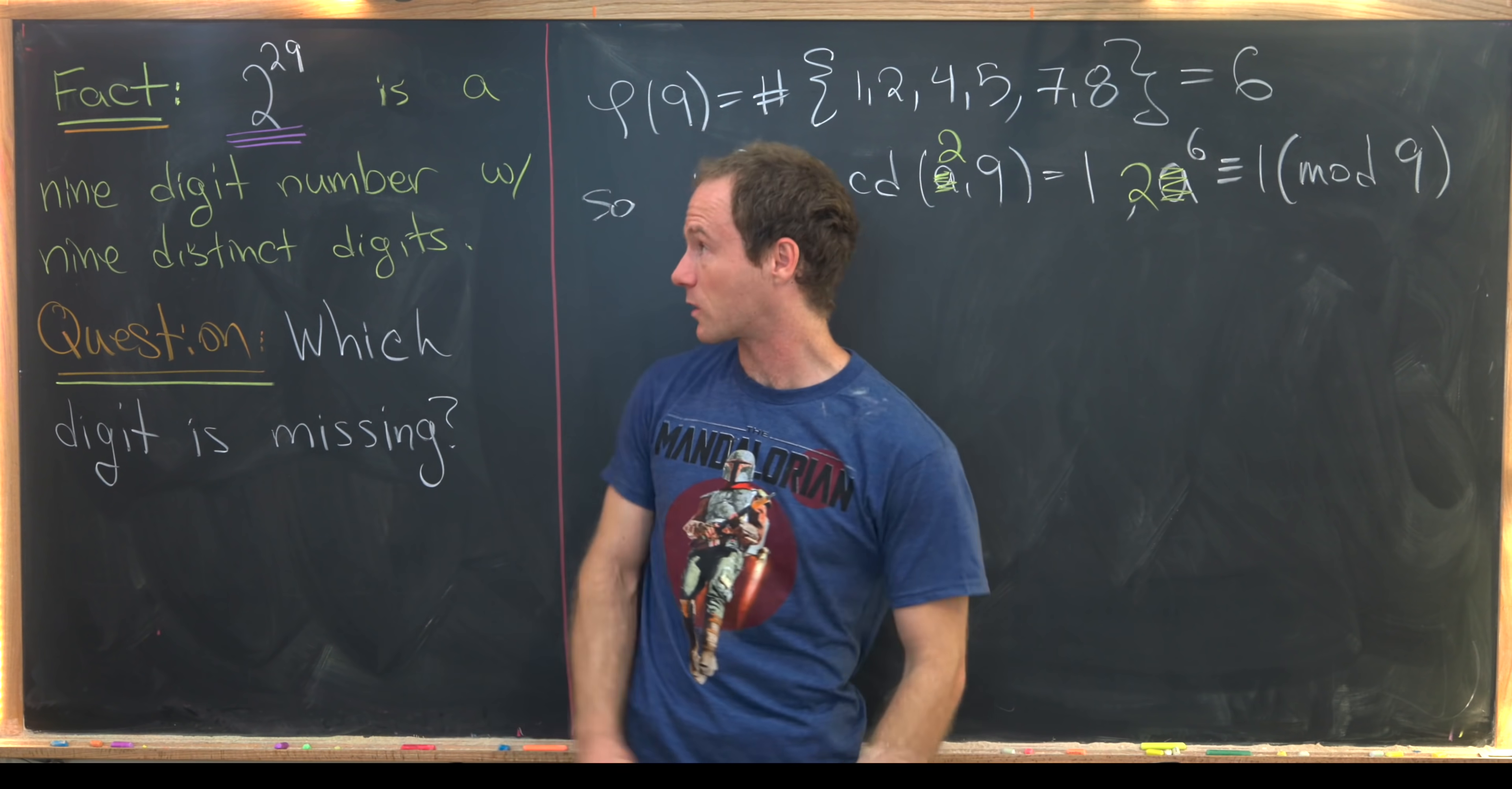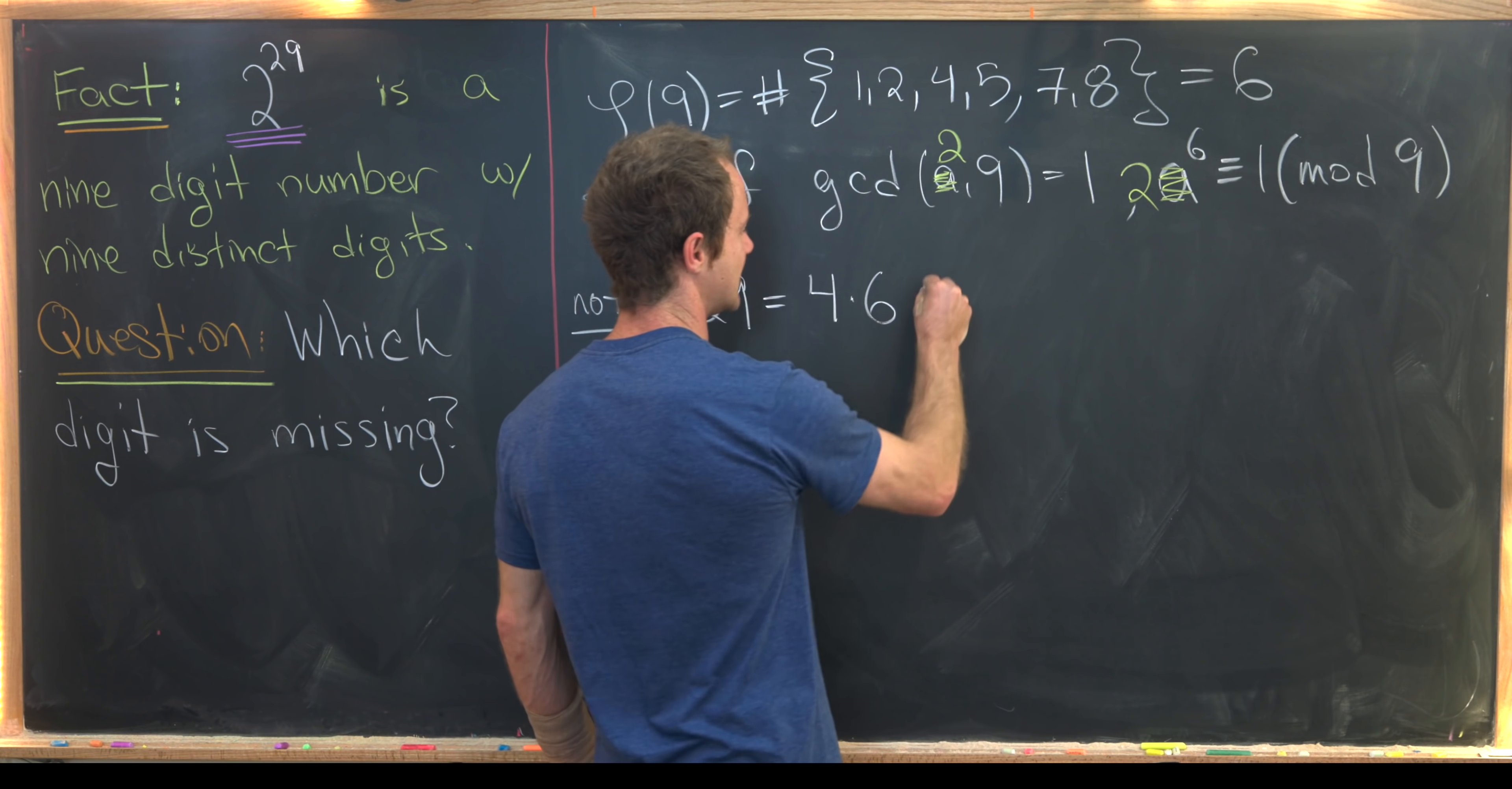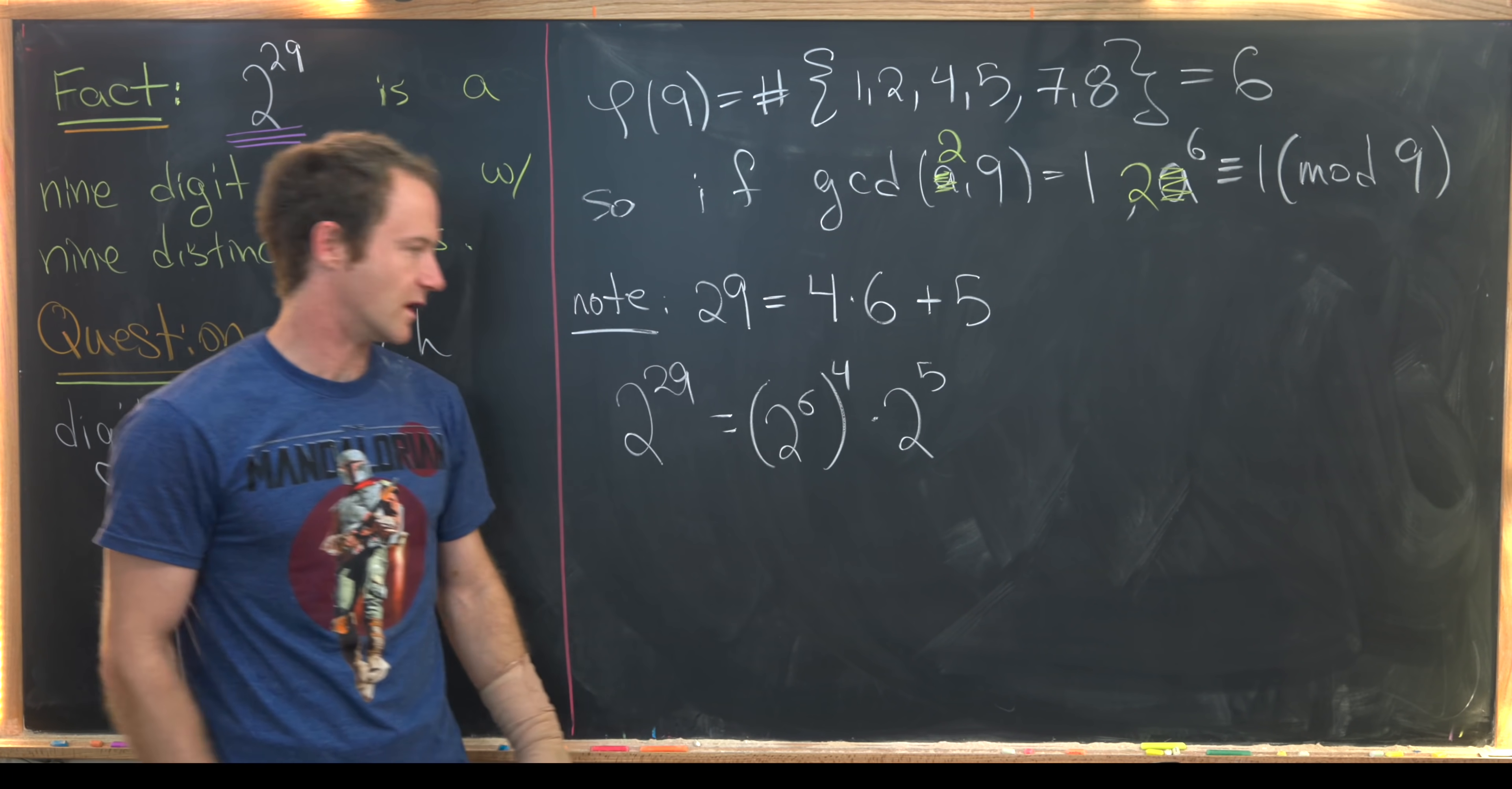Okay, so now where can we go from there? Because we don't have a sixth power, we have a 29th power, but no worries, we can use division with remainder between six and 29. So let's notice we have the following setup: we have 29 is equal to something times six plus a remainder. Well, what are we going to use here? Well, maybe four times six, that's 24, plus a remainder of five. So that means we can take two to the 29 and rewrite it as two to the six to the four times two to the five.